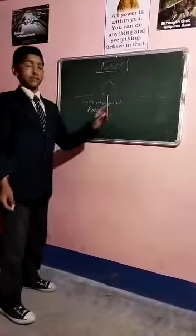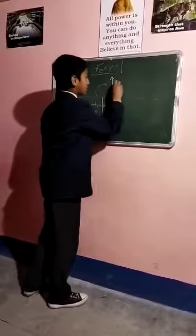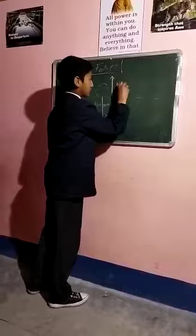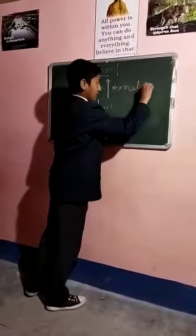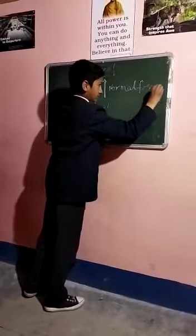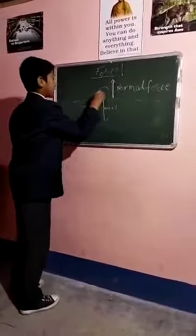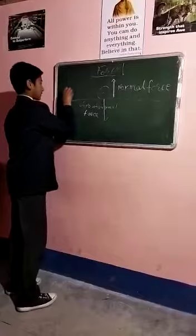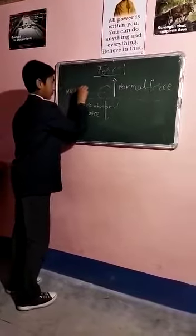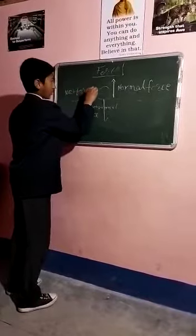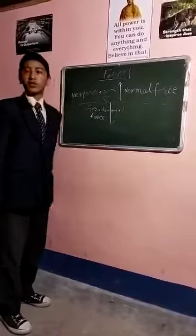And to balance this force, a force is exerted by the ball — that is the normal force. These forces are balanced and the net force on the ball is zero. Understand that gravitational force is acting on the stationary object.